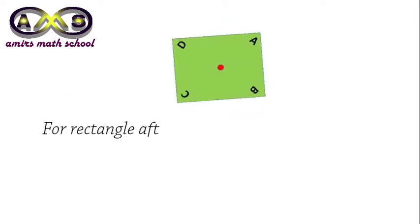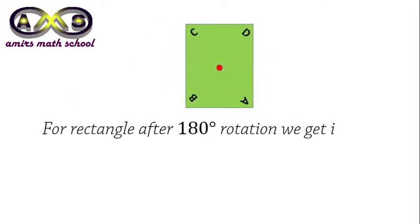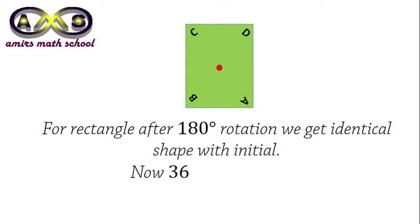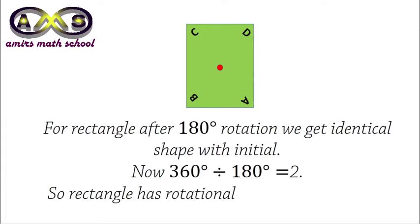For a rectangle, after 180 degree rotation, we get the identical shape with the initial position. Now, 360 degrees divided by 180 degrees is equal to 2. So, rectangle has rotational symmetry of order 2.